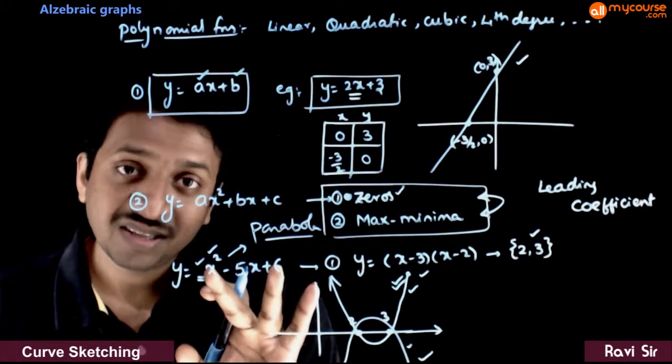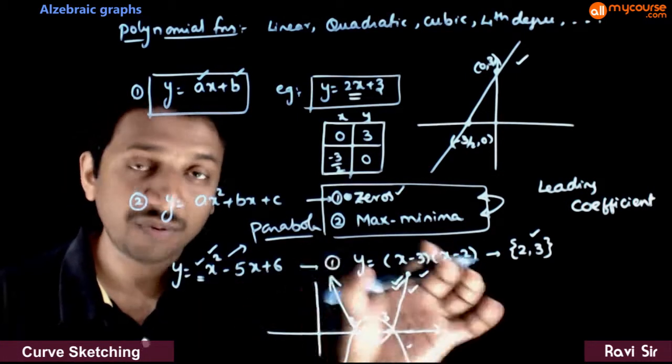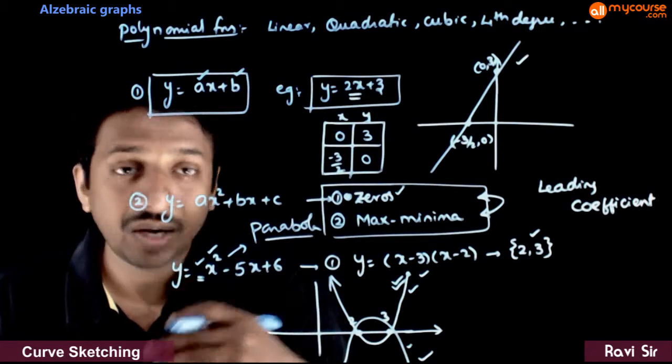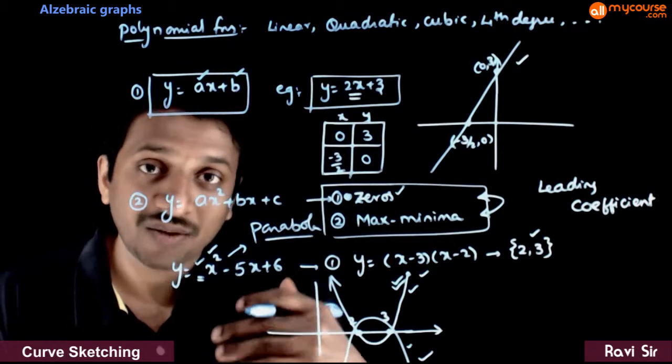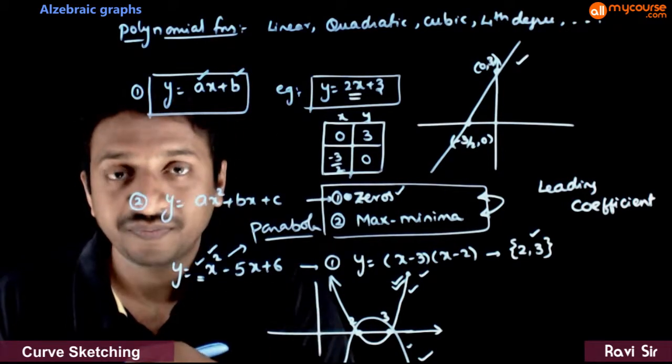But sometimes finding zeros will be difficult — sometimes the quadratic expression cannot be factorized nicely. So let us see what we can do in such cases.